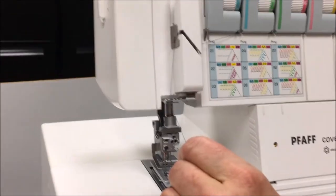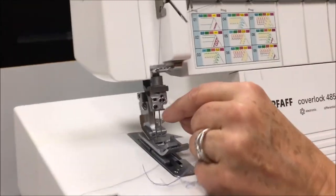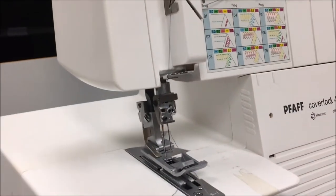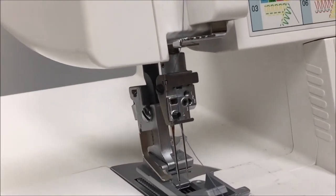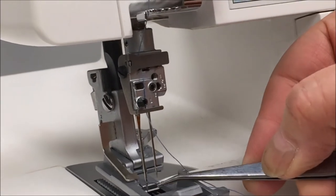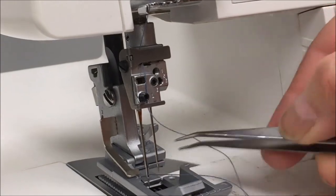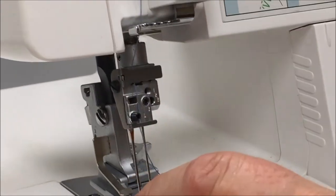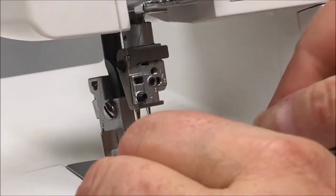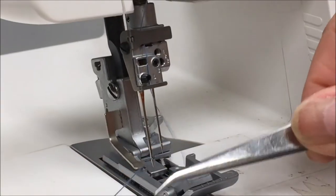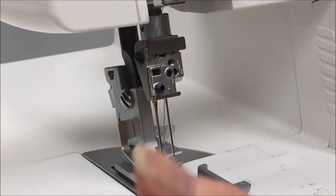Now we need to bring our needles to their highest position. We have another thread guide here and there's one more right above the needle. We will thread the needle front to back. Tweezers are very helpful. I'm going to lower the presser foot just temporarily to help me get that. Try not to get my hand in front of the camera. There we go. Just keep that thread to the left side.